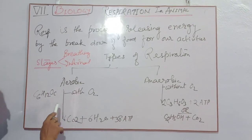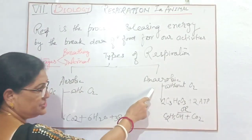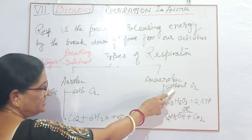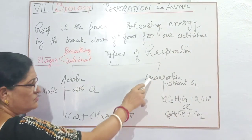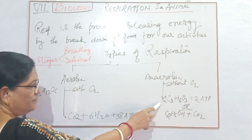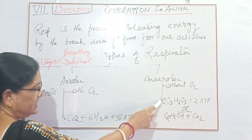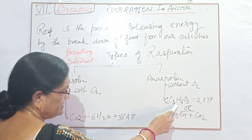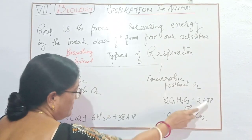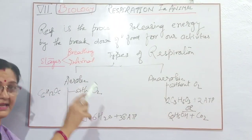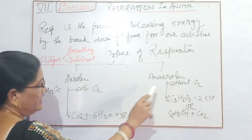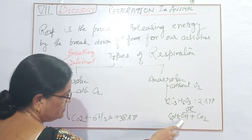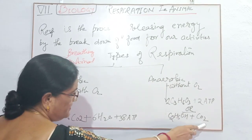Now we come to anaerobic respiration, which occurs without the requirement of oxygen. Glucose is directly burned and dissociated into two compounds: lactic acid and ATP, when it occurs in animal cells.